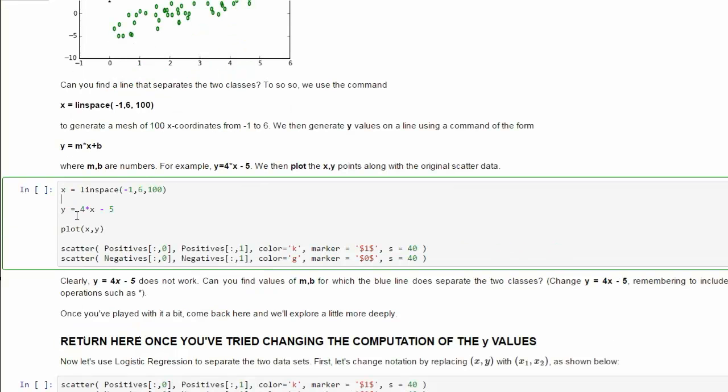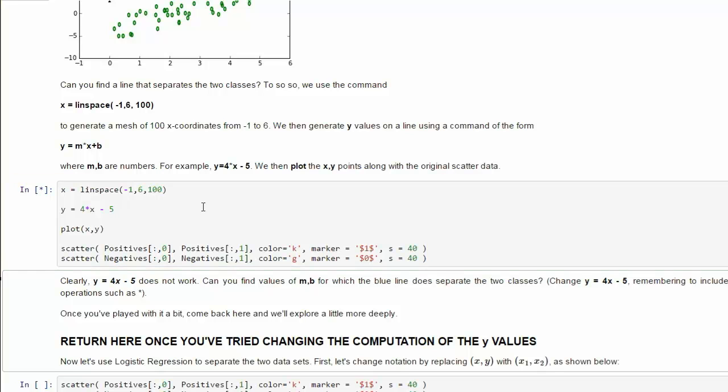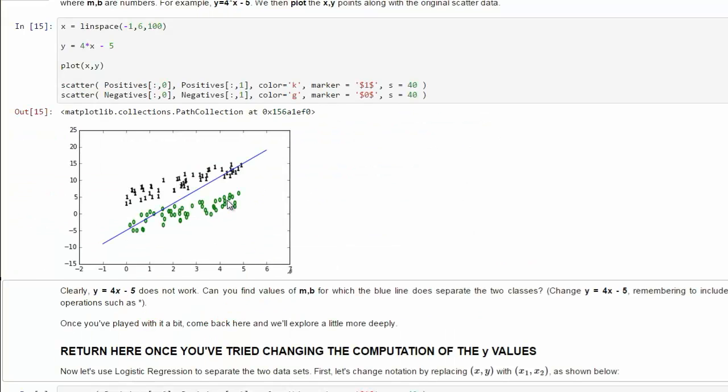If we add the negatives, then we'll see something very similar to what we were looking at earlier. We have two classes which can be contained in convex sets which don't intersect. We should be able to find a line that separates these two. We can just pick some. Say 4x minus 5, that's a line. See if it works. That doesn't work, it doesn't separate.